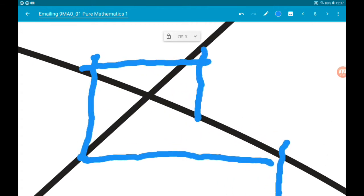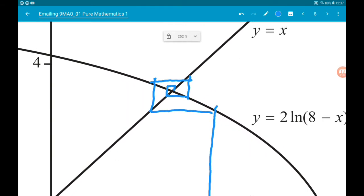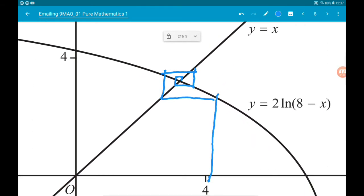Across to the line, up to the curve, across to the line, down. So we can see that we are spiraling inwards. So we would then say yes, this is an appropriate iteration formula because we are spiraling in on the point of intersection. So say something like that and you would be golden.